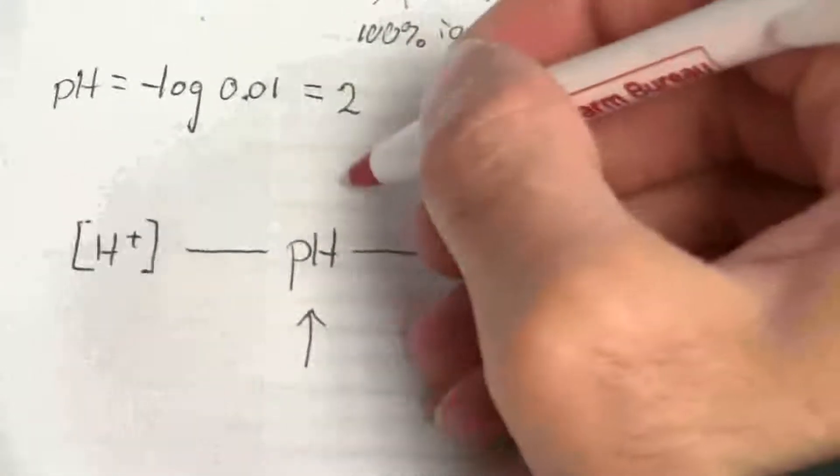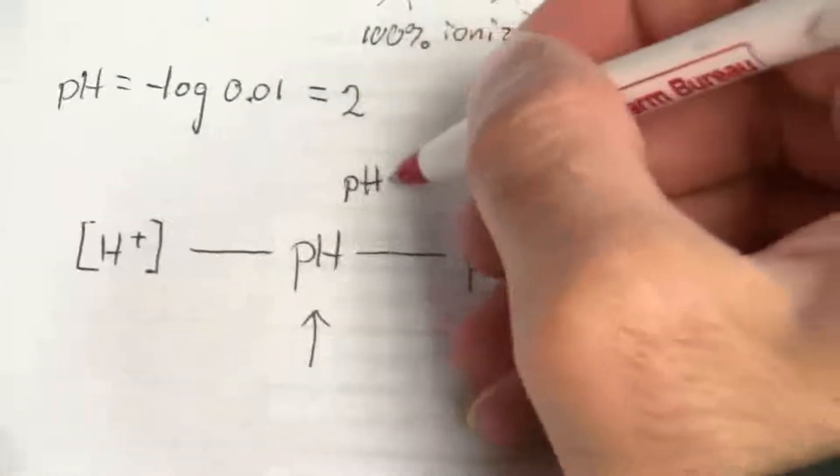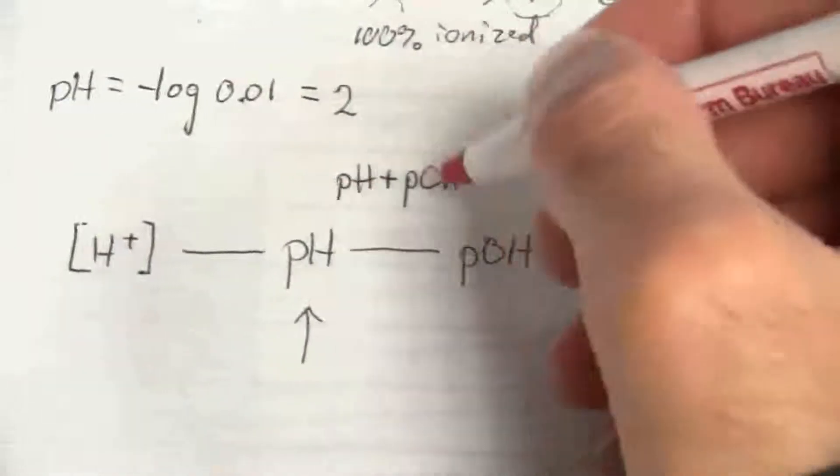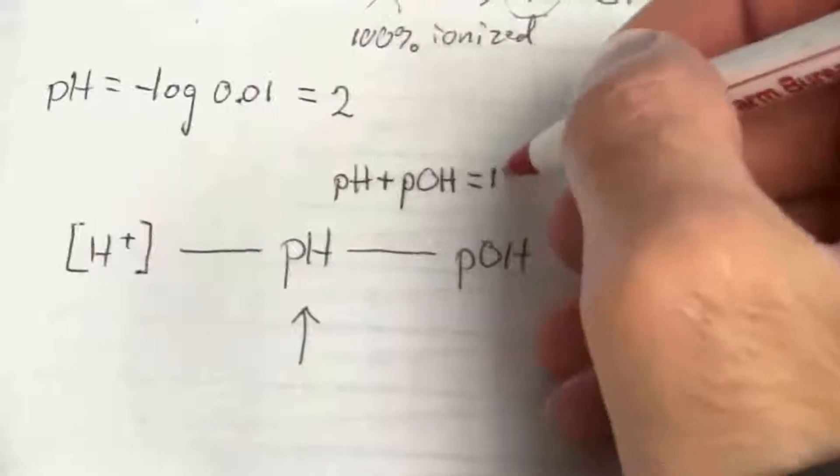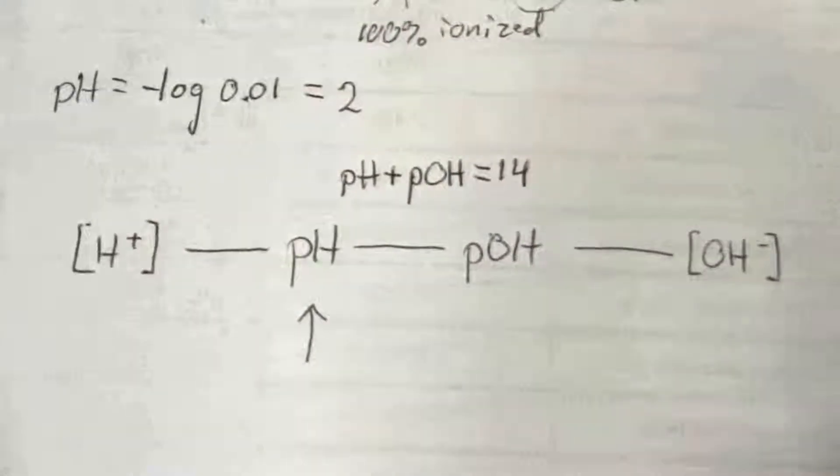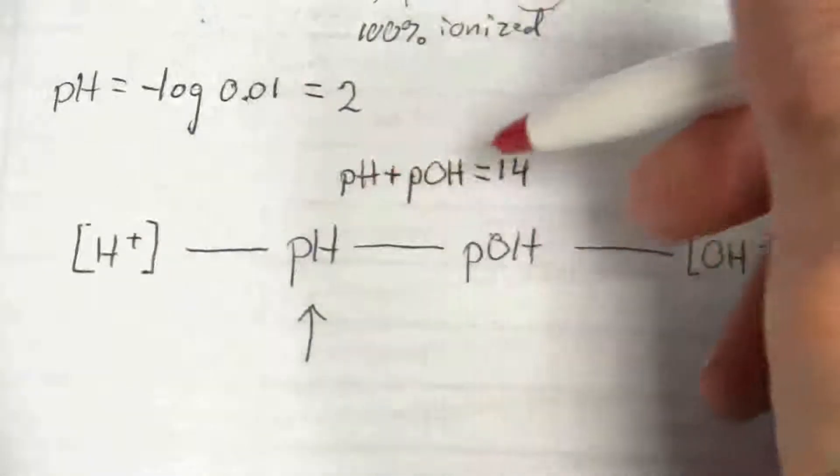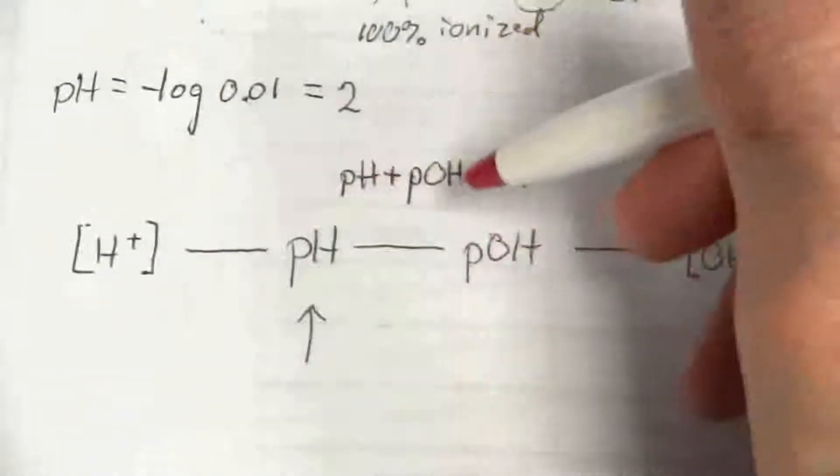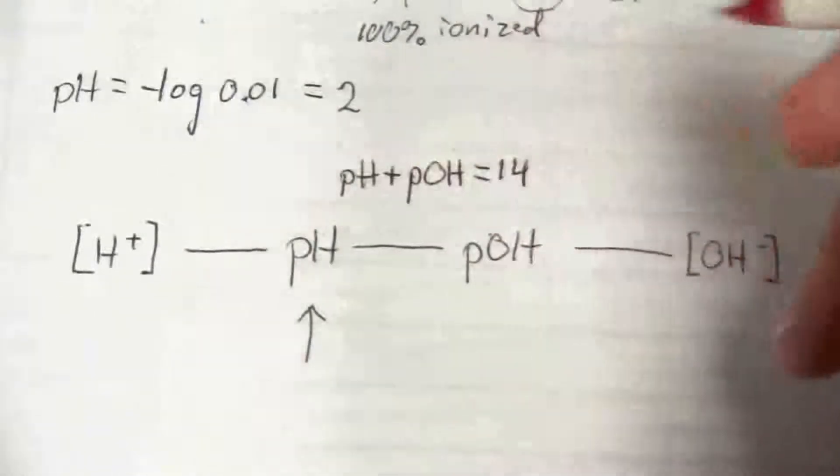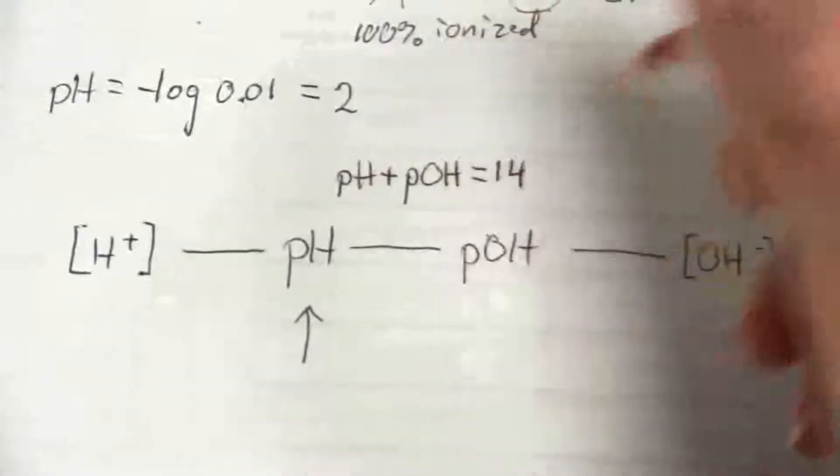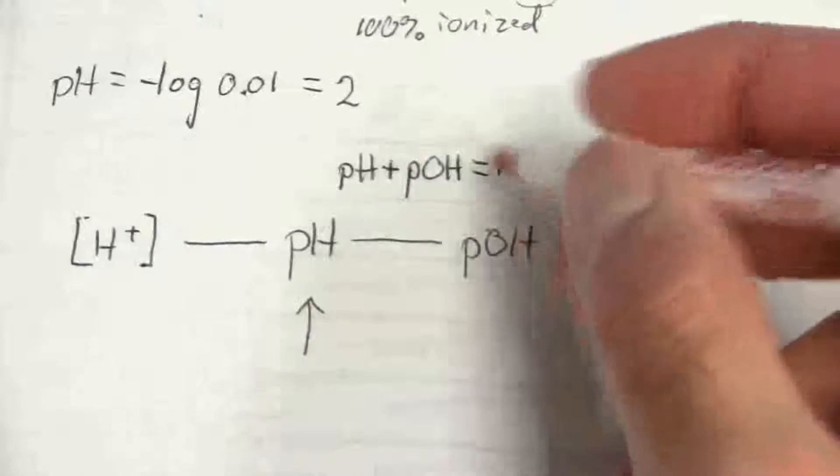So to go from pH to pOH, we need this relationship. When you add the two together, it always equals 14. pOH is 14 minus the pH. If you just move that pH over there, pOH is 14 minus the pH.